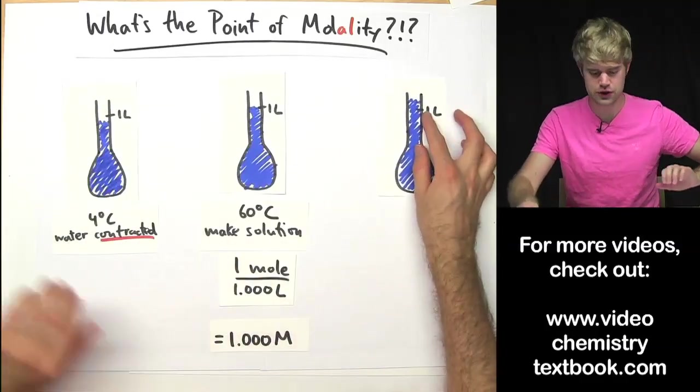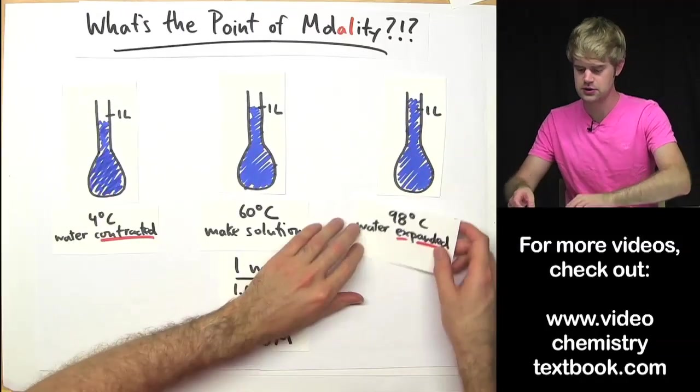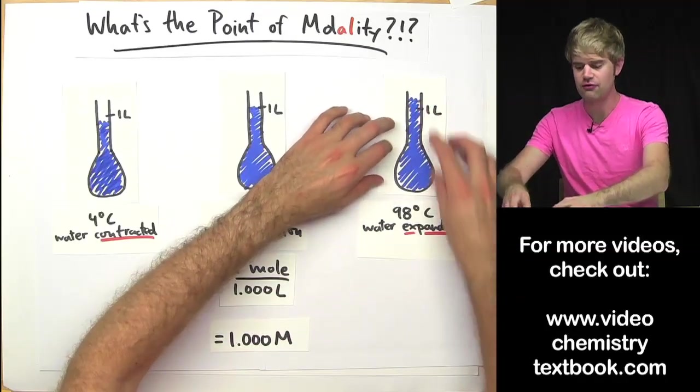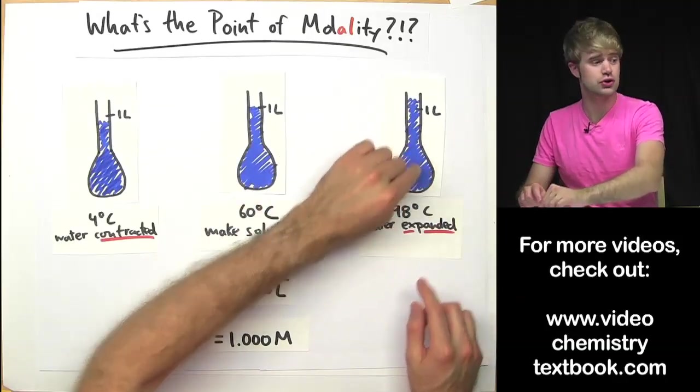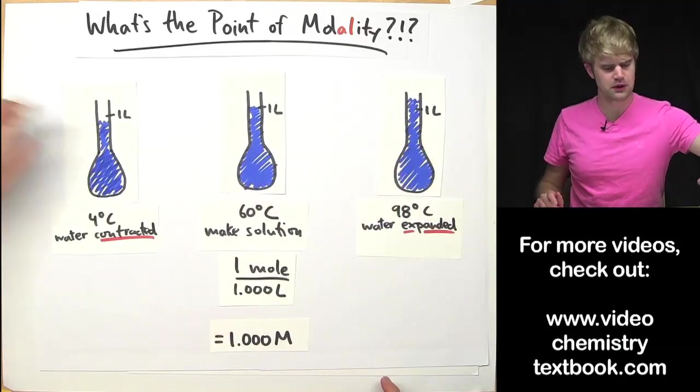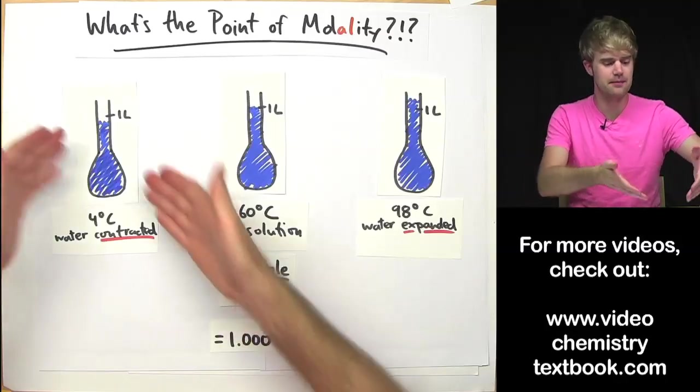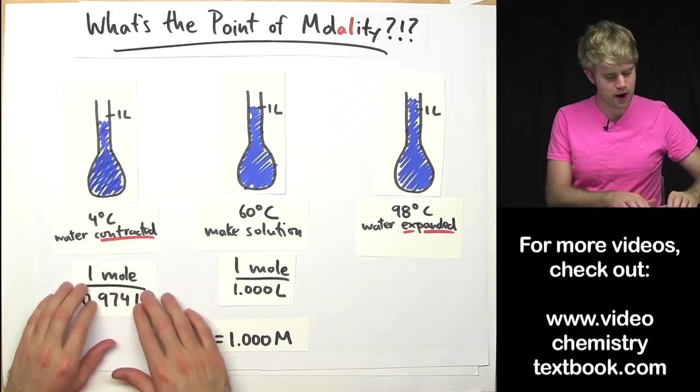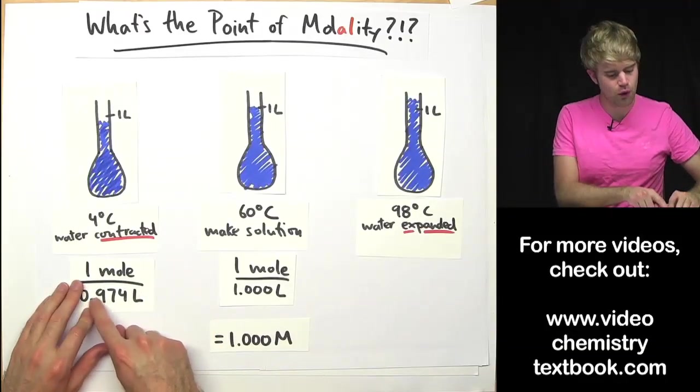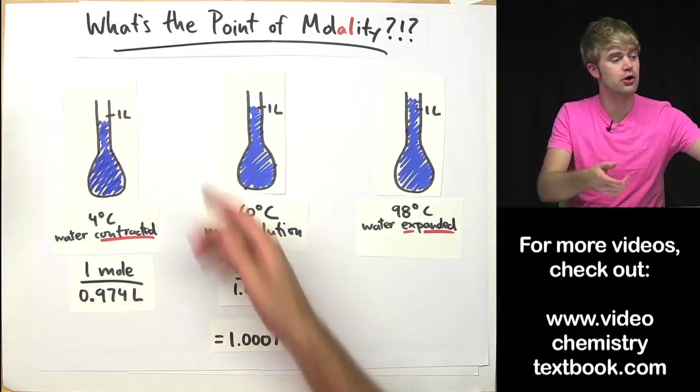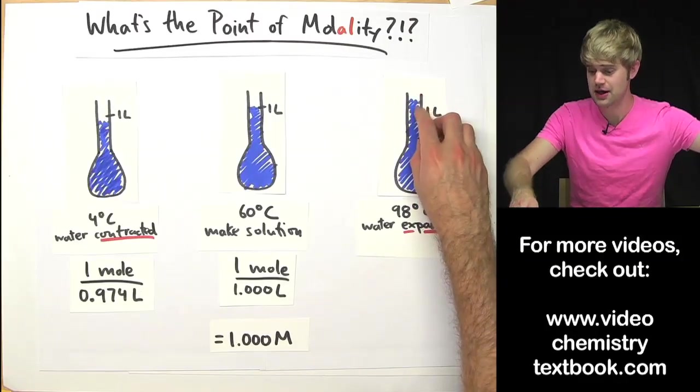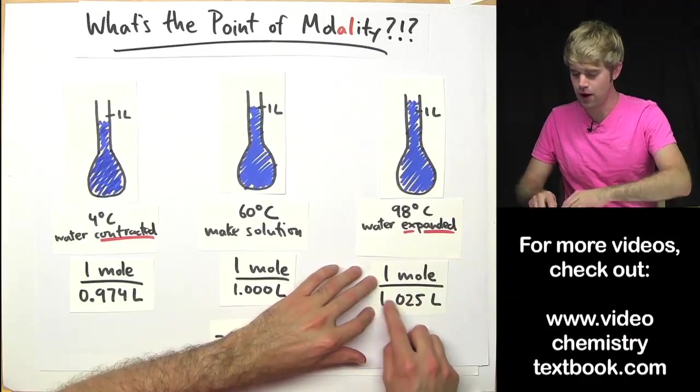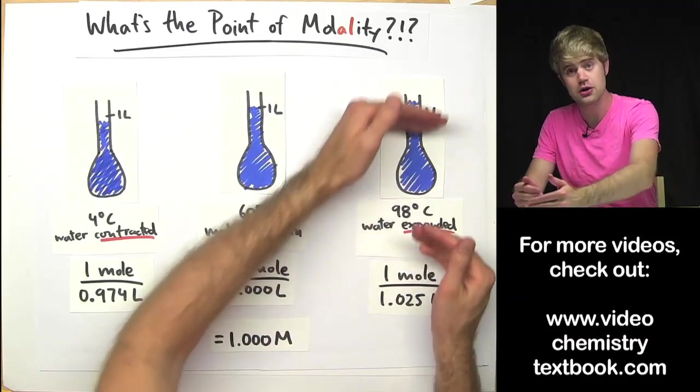And then on the other hand, at temperatures above 60 degrees, the water will expand. So instead of one liter here, now I have more than one liter of solution in this flask. So the volume has gone down here but the amount of solute has not because the solute is still just dissolved in the solution. So now I have one mol of solute but it's only in 0.974 liters because the volume has gone down, and then in this example here where the water expanded, now I have one mol of solute in 1.025 liters because it went up.